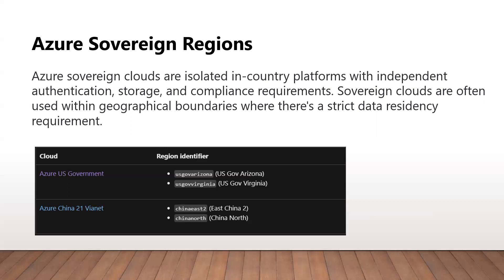At the moment, there are two sovereign regions: Azure Government and Azure China. The Azure Government cloud is available to US government customers and their partners. US federal, state, local, and tribal governments and their partners have access to this dedicated instance, and the operations of these US government instances are controlled by screened US citizens.